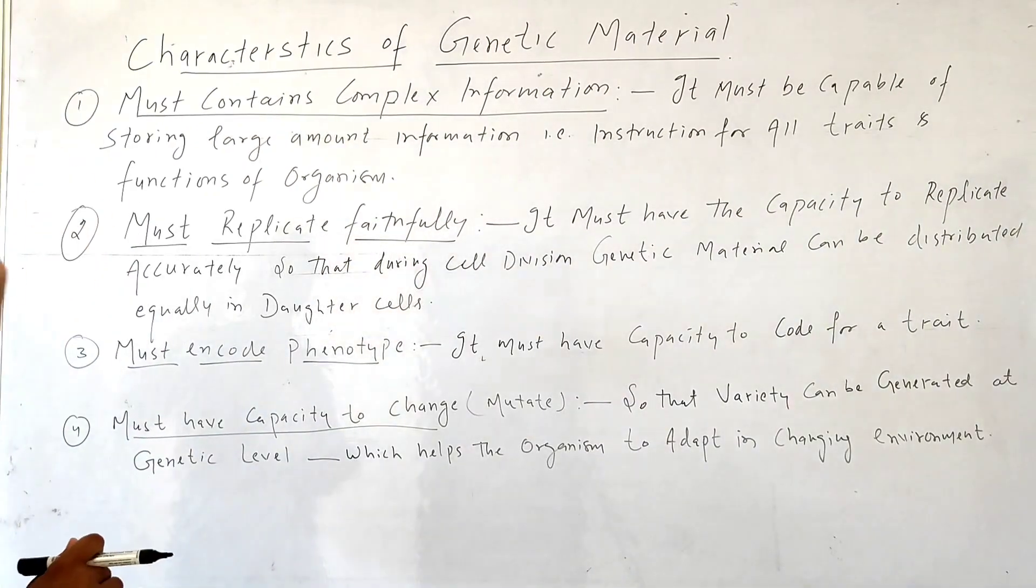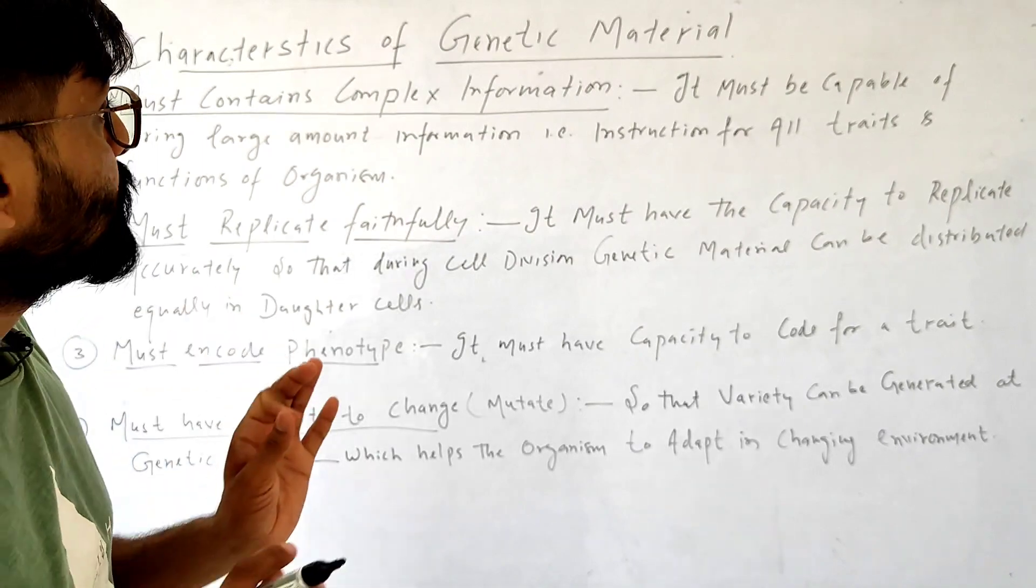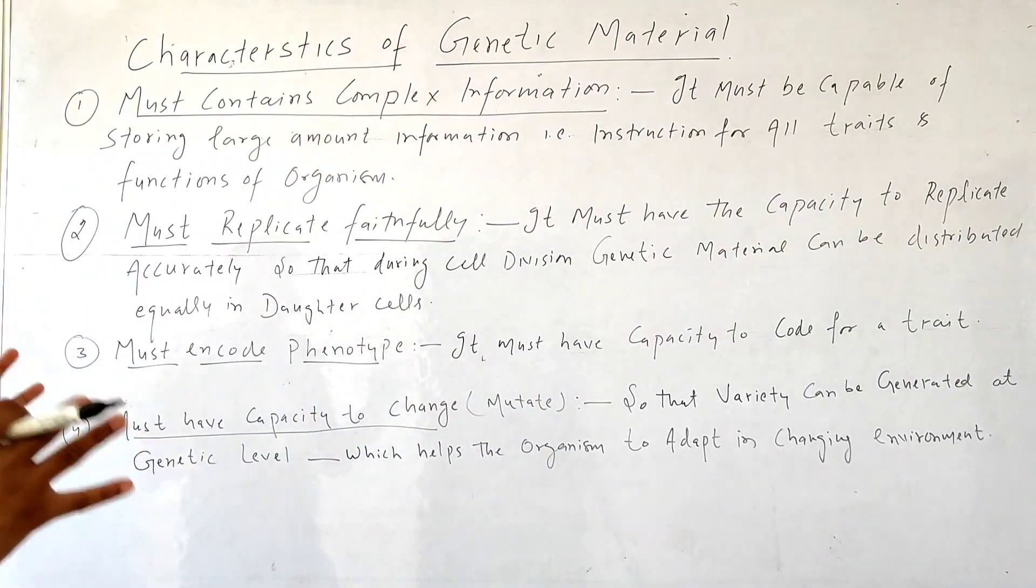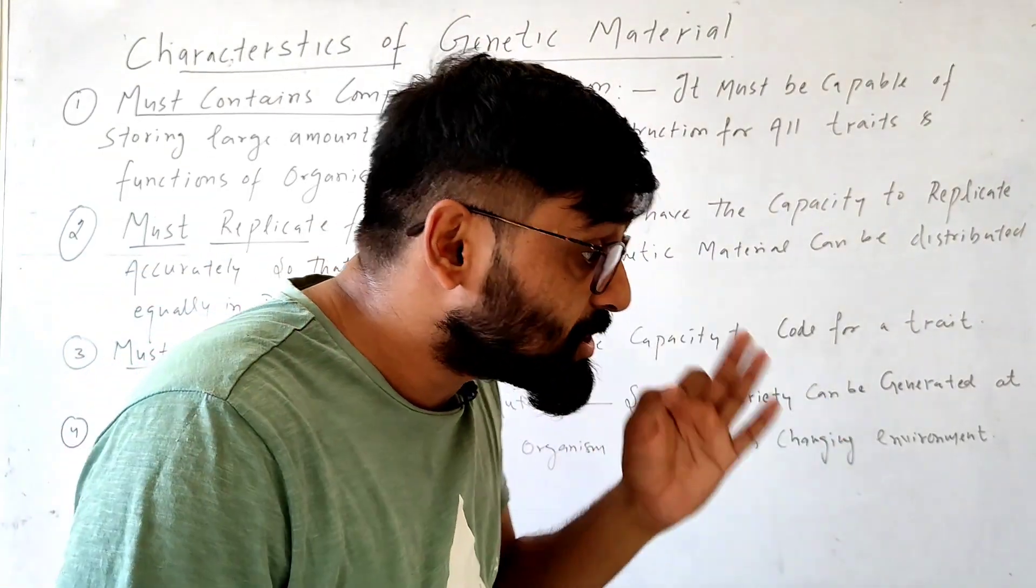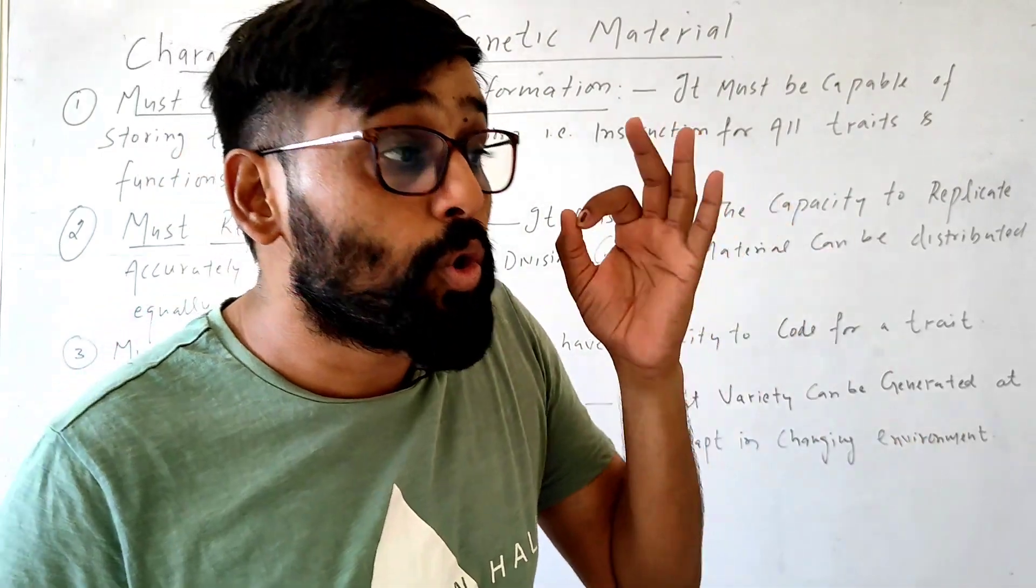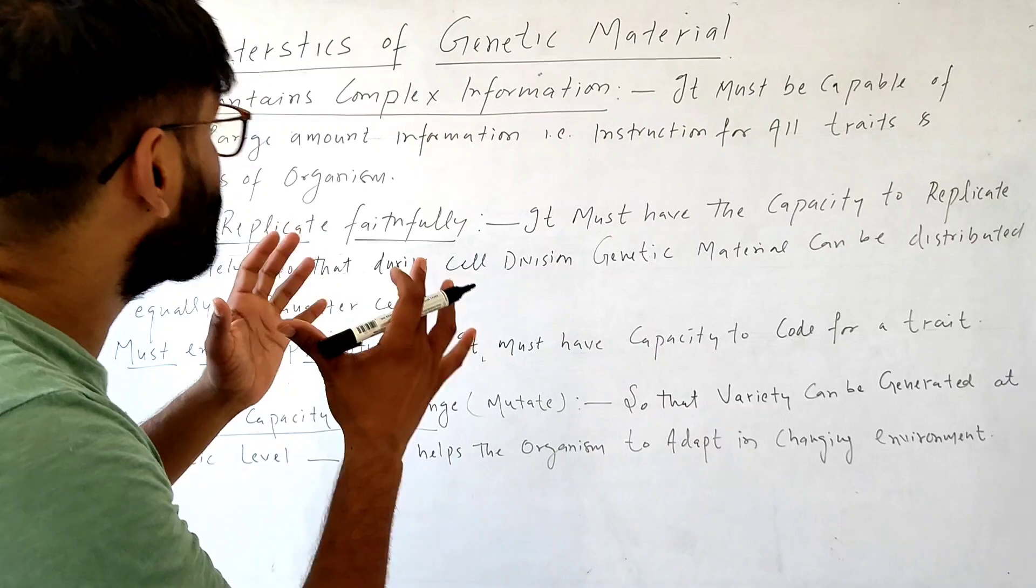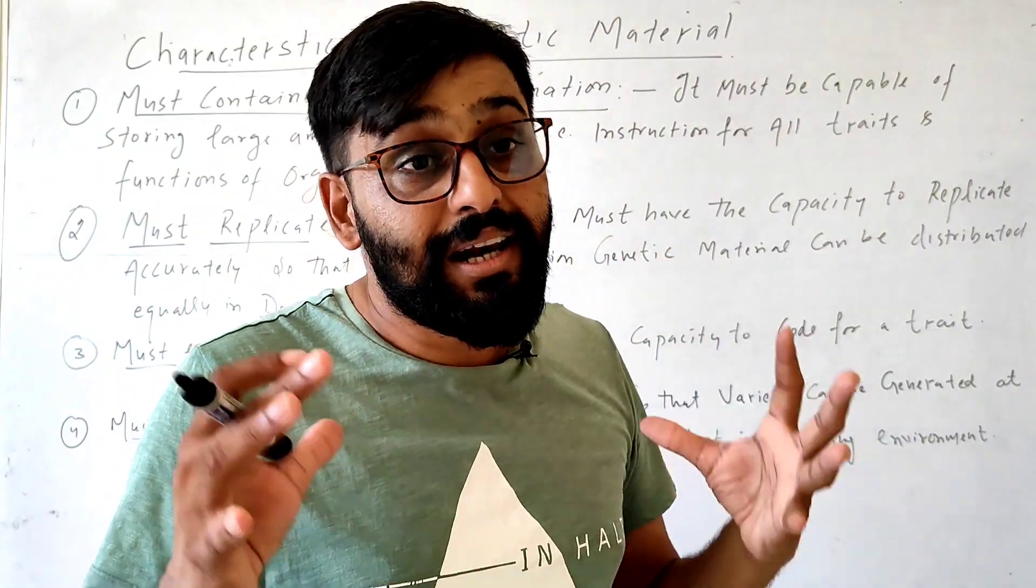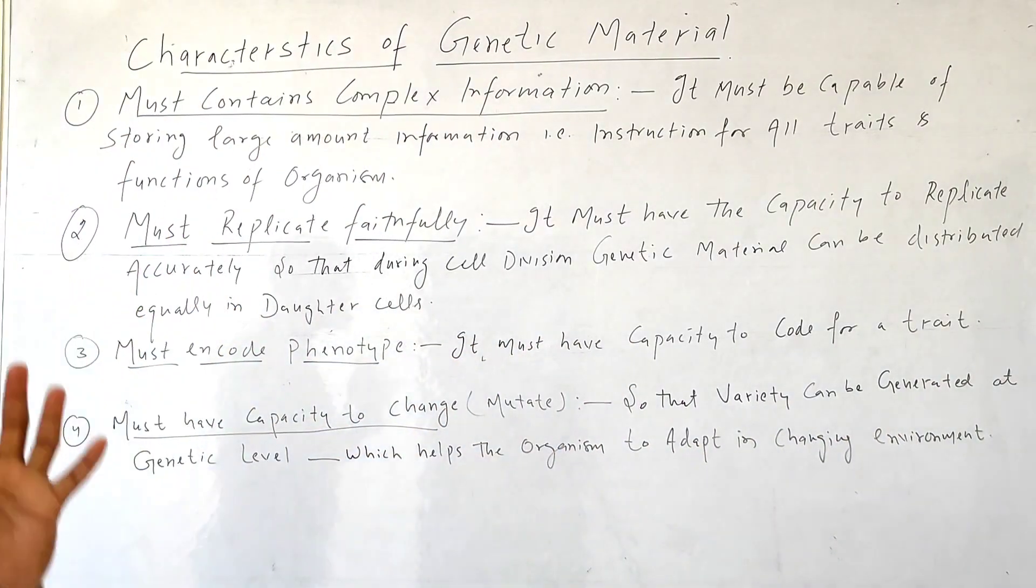First, genetic material must contain complex information. The genetic material must be capable of storing large amounts of information - instructions for all the traits, all the functions, all the reactions that are occurring inside a body. So it must be capable of storing all types of information related to that organism.